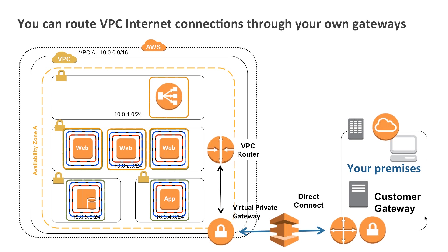You can route your VPC's internet connections back through your own gateways. A private web or application server that needs to talk to the internet to get its updates doesn't have to route through Amazon's internet gateways. You can route it back across your virtual private gateway, back into your own data centre, and use your existing threat management gateways, for example. We leave that choice up to you.